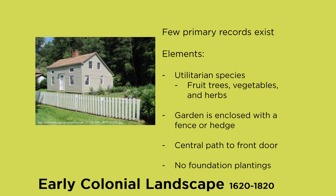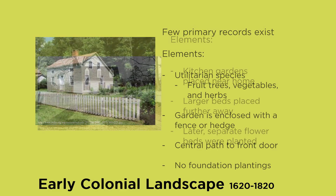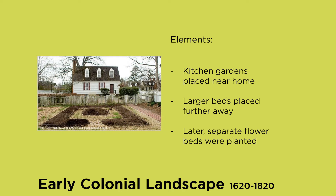I really recommend you go down there to see how they've interpreted landscapes from the early Western Reserve days. Kitchen gardens were very prevalent and common in this time. They were placed near the house because these were items the owners used frequently. Larger beds containing fruits and vegetables were placed a little further from the house because they were used less frequently. Early on we see few flower beds, but later, as seeds and bulbs became more available, they were incorporated more.